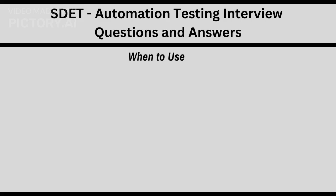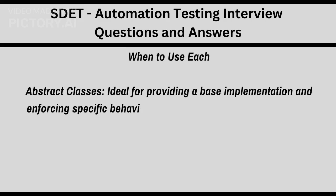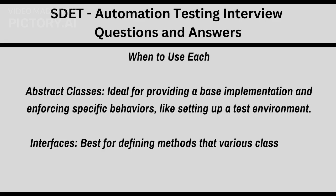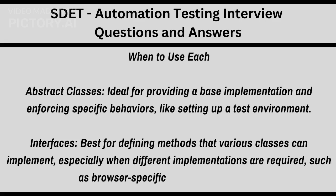When to use each: abstract class is ideal for providing a base implementation and enforcing specific behaviors, like setting up a test environment. Interfaces are best for defining methods that various classes can implement, especially when different implementations are required, such as browser-specific actions in Selenium.